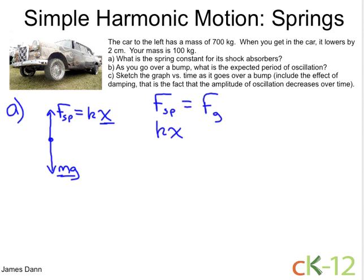So we have that the spring constant times the distance it's compressed is equal to your weight. Let's solve for k, so I'll divide both sides by the distance x. And we get that the spring constant is equal to mg divided by x.